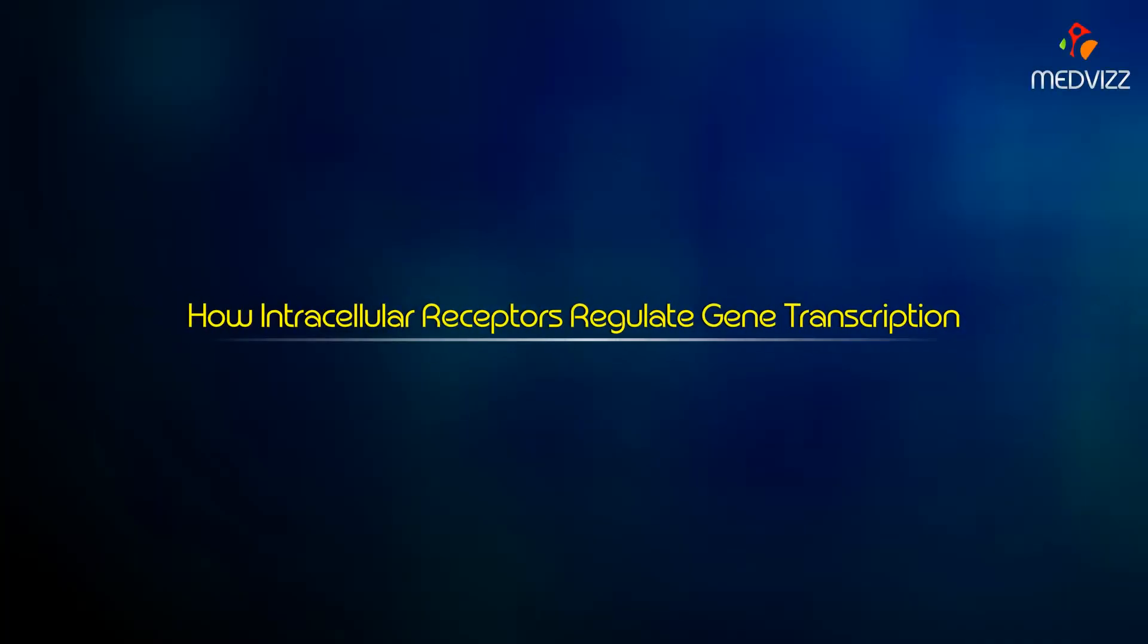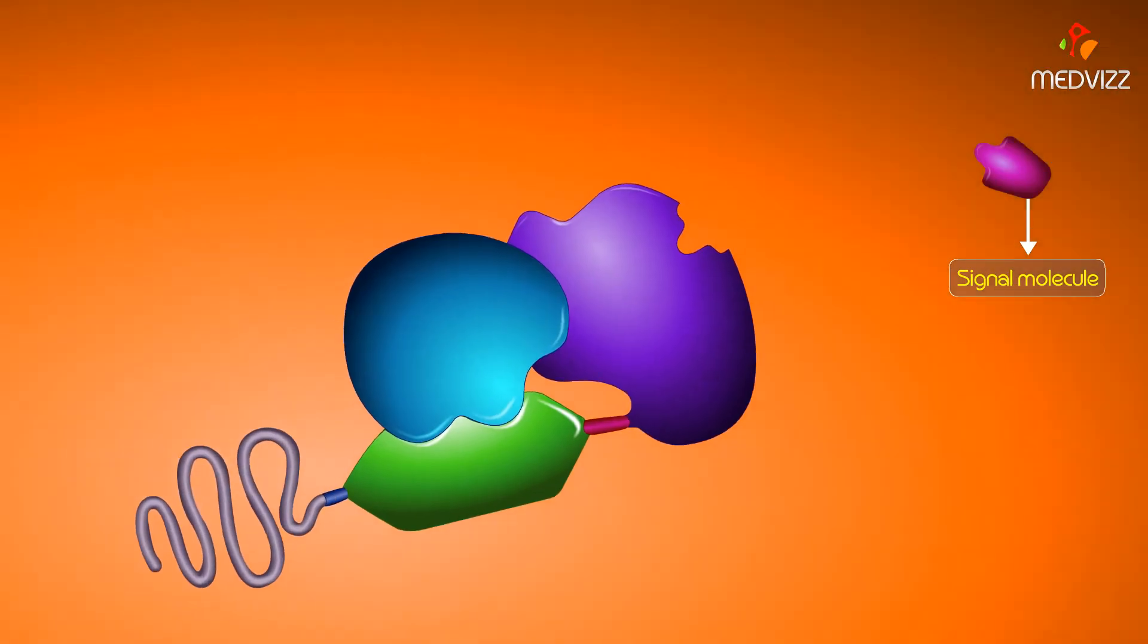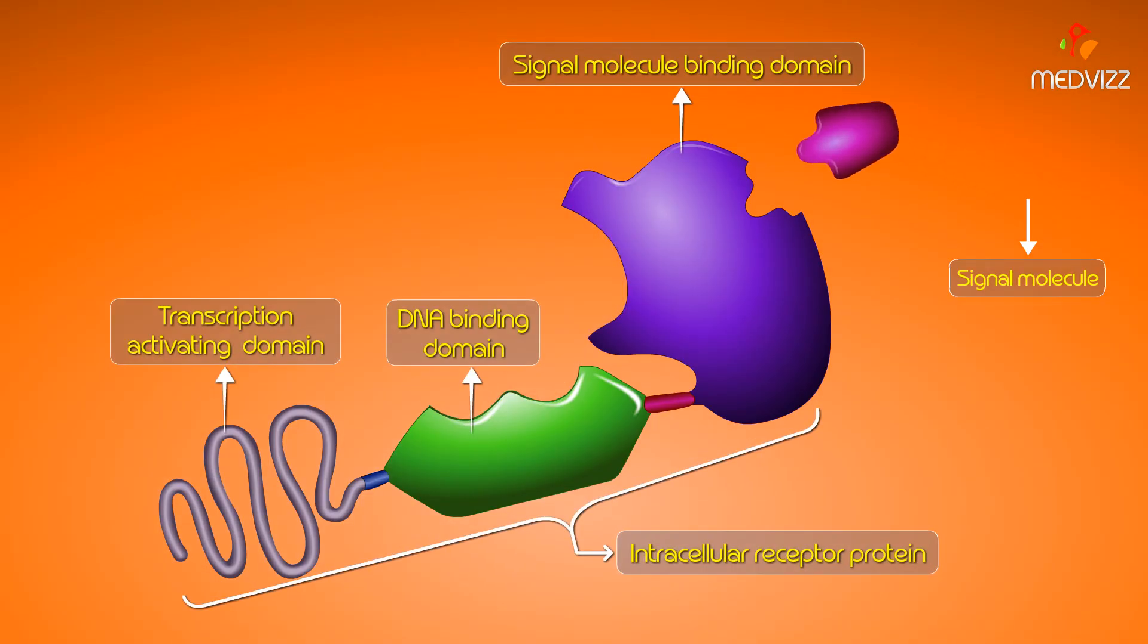How Intracellular Receptors Regulate Gene Transcription. Many cell signals are small lipid soluble molecules that can readily cross the cell membrane where they interact with the receptor protein in the cytoplasm or in the nucleus.